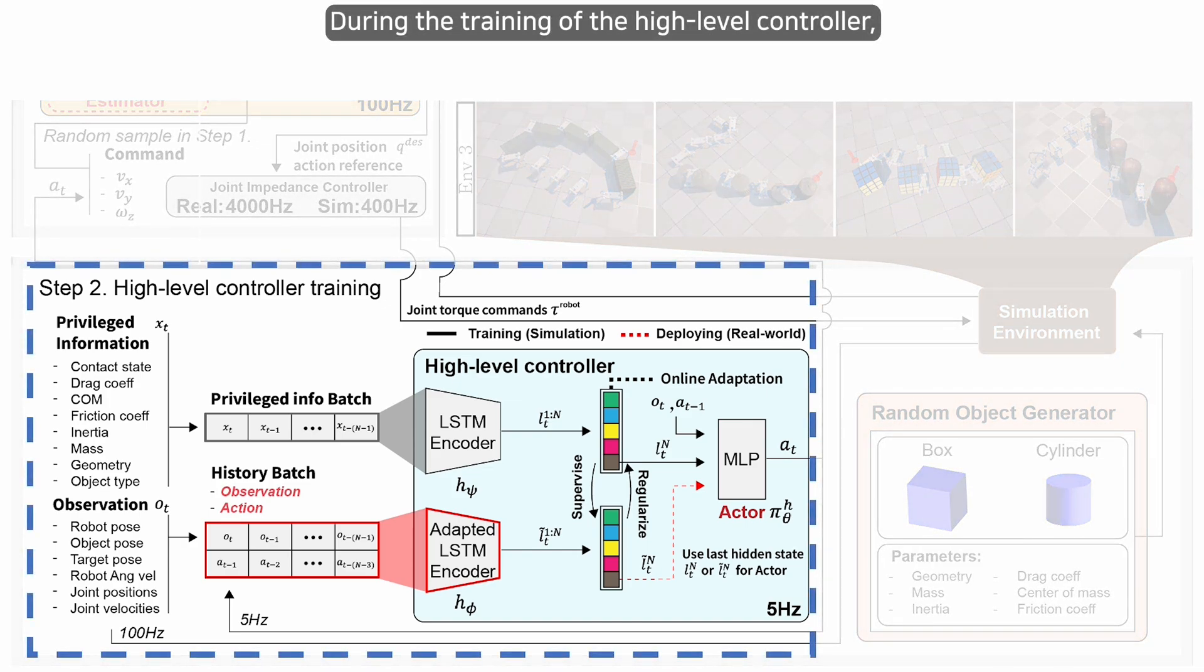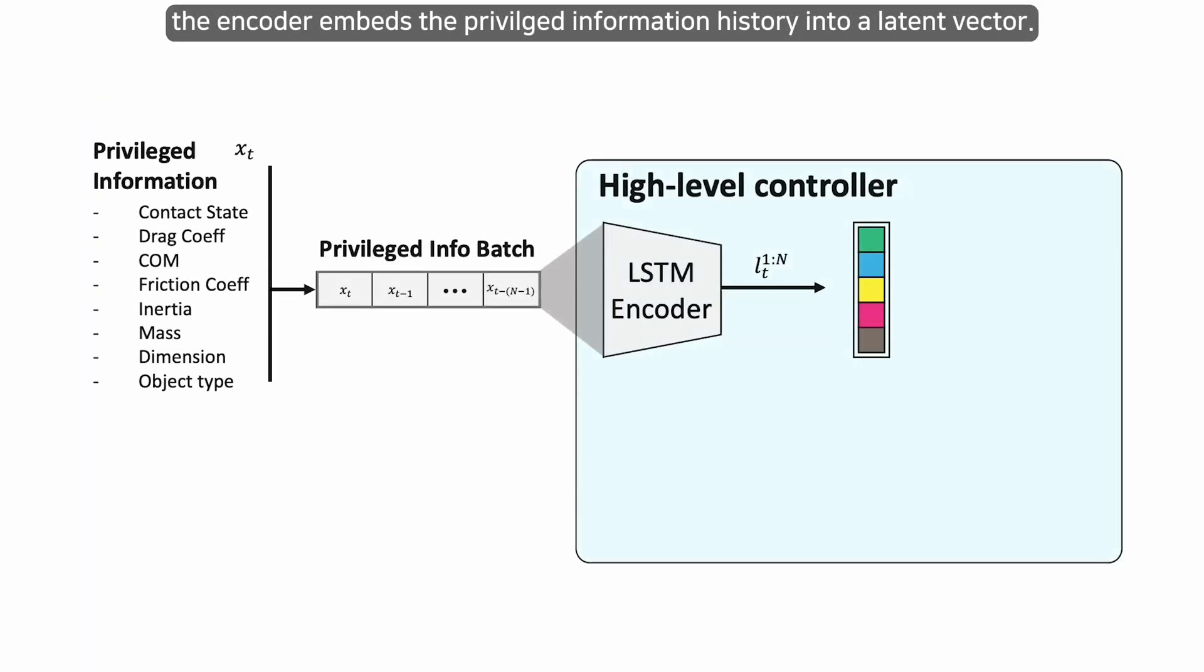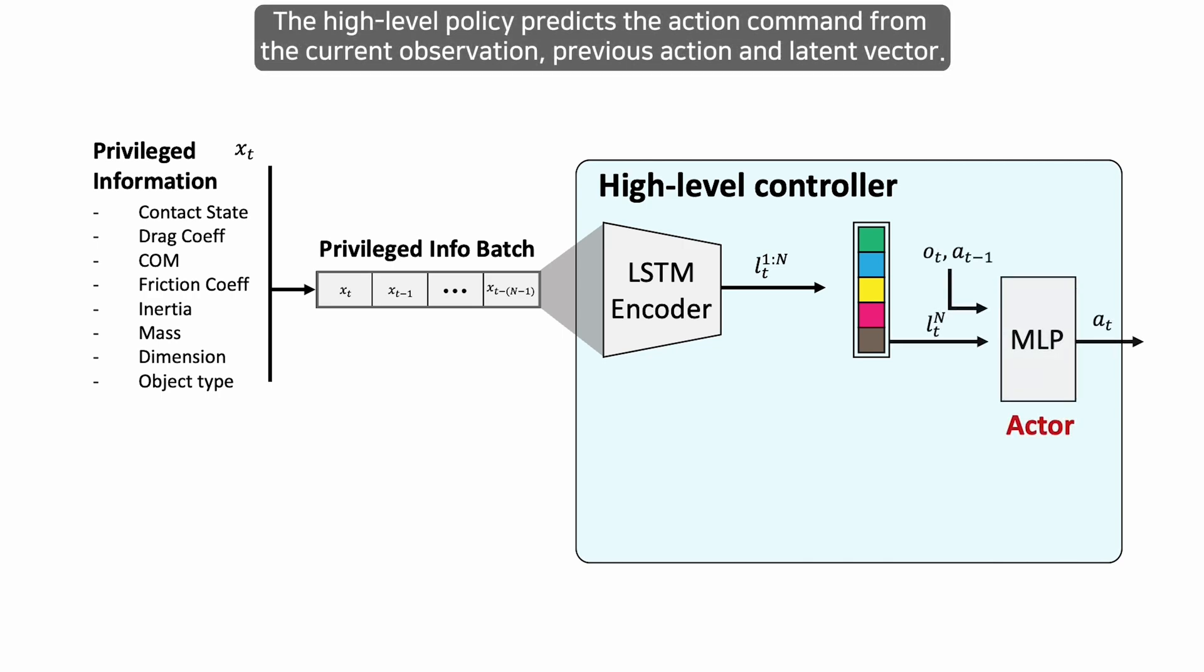During the training of the high-level controller, the encoder embeds the privileged information history into a latent vector. The high-level policy predicts the action command from the current observation, previous action and latent vector.